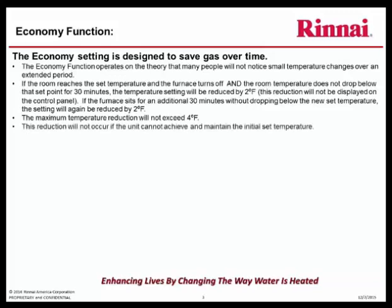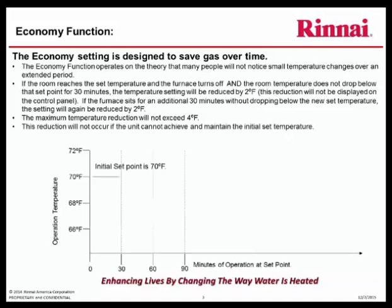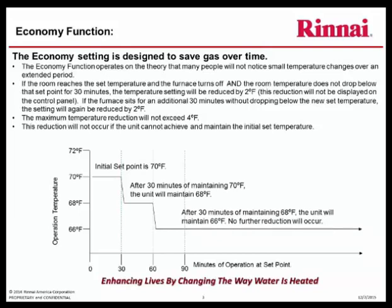This reduction will not occur if the unit cannot achieve and maintain the initial set temperature. For example, we have an initial set temperature of 70 degrees. After 30 minutes of maintaining 70 degrees, the unit will drop the set temperature and maintain 68 degrees Fahrenheit. After 30 minutes of maintaining 68 degrees, the unit will drop the set temperature again and maintain 66 degrees. At this point, no further reduction will occur.